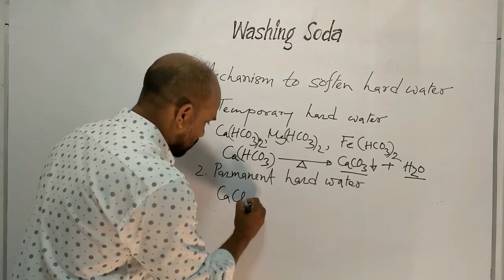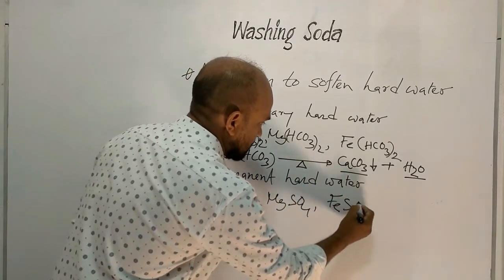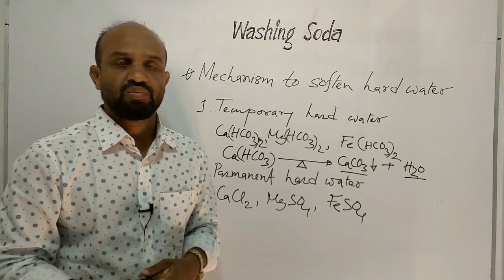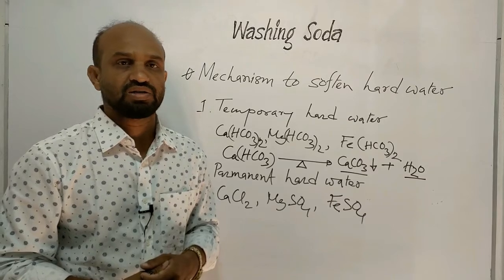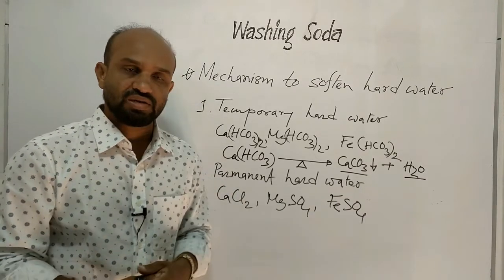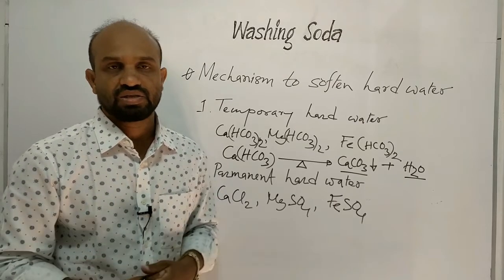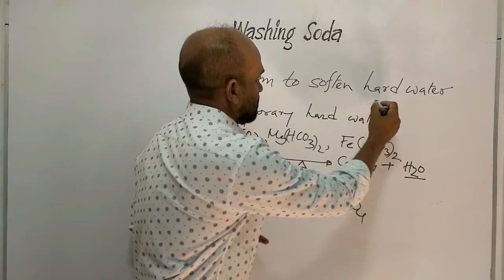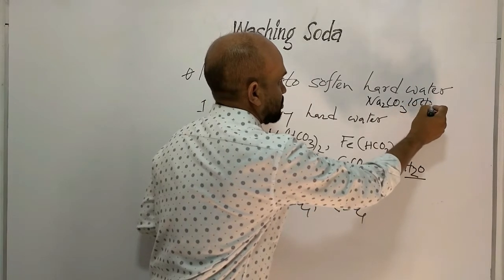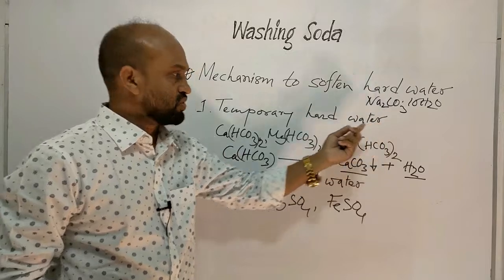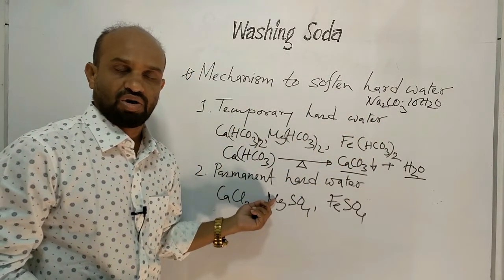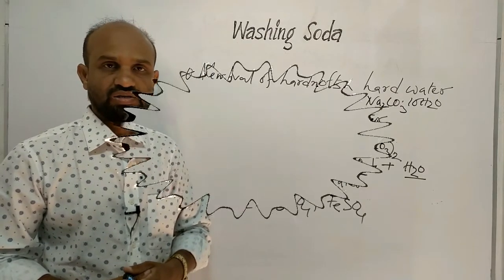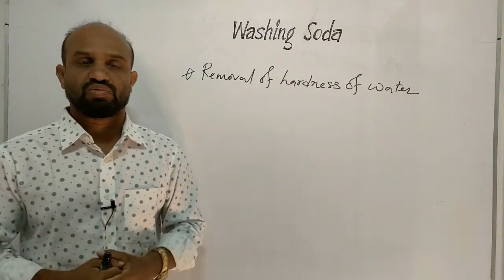But when calcium chloride, magnesium sulfate, and iron sulfate salts are dissolved in water, this water is called permanent hard water, and this phenomenon is called permanent hardness. In this case, applying heat alone cannot remove the hardness. Washing soda — sodium carbonate decahydrate — is used to remove both temporary and permanent hardness of water.